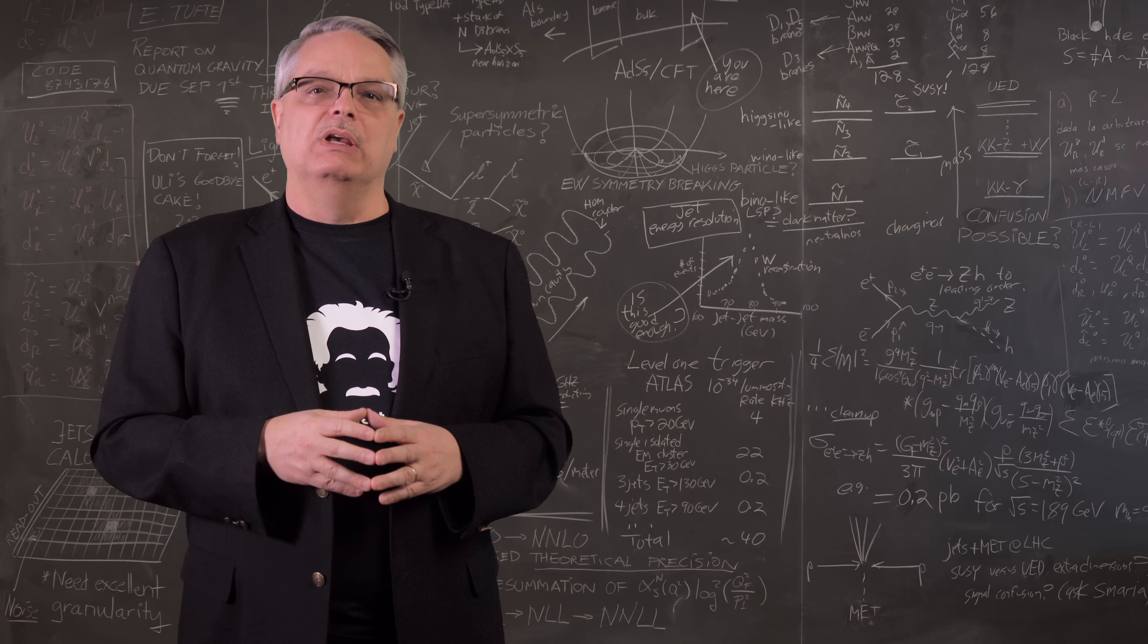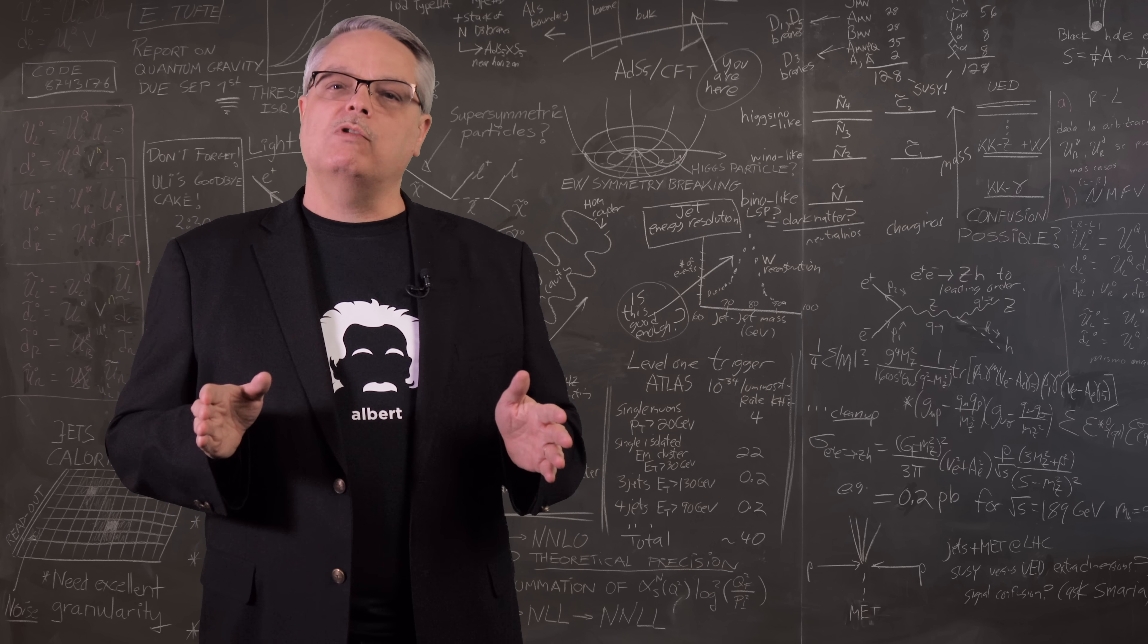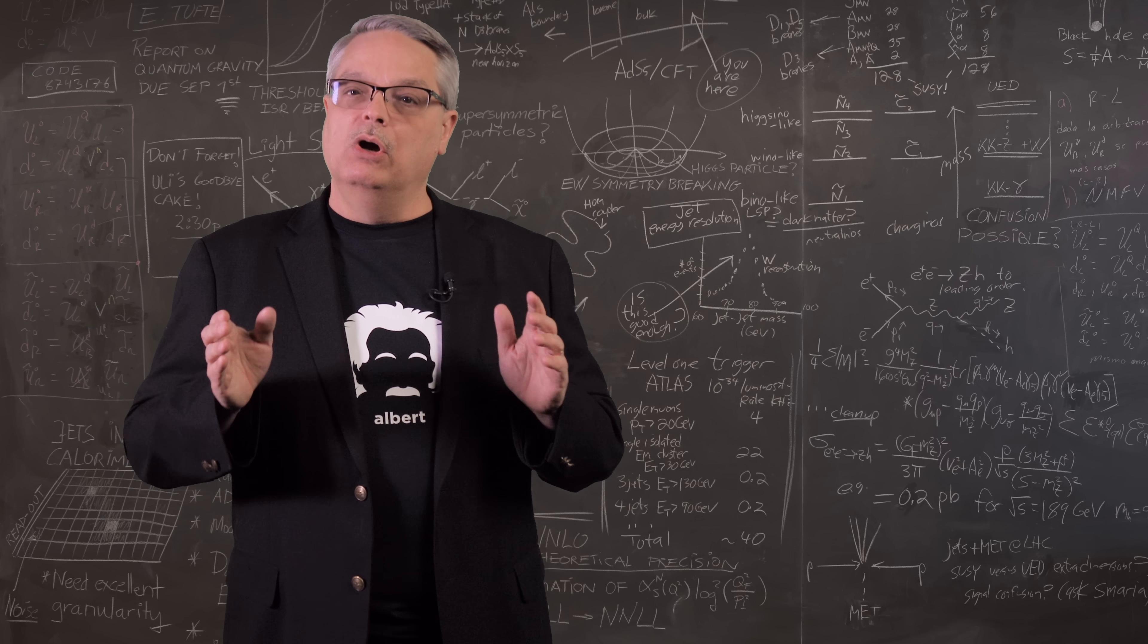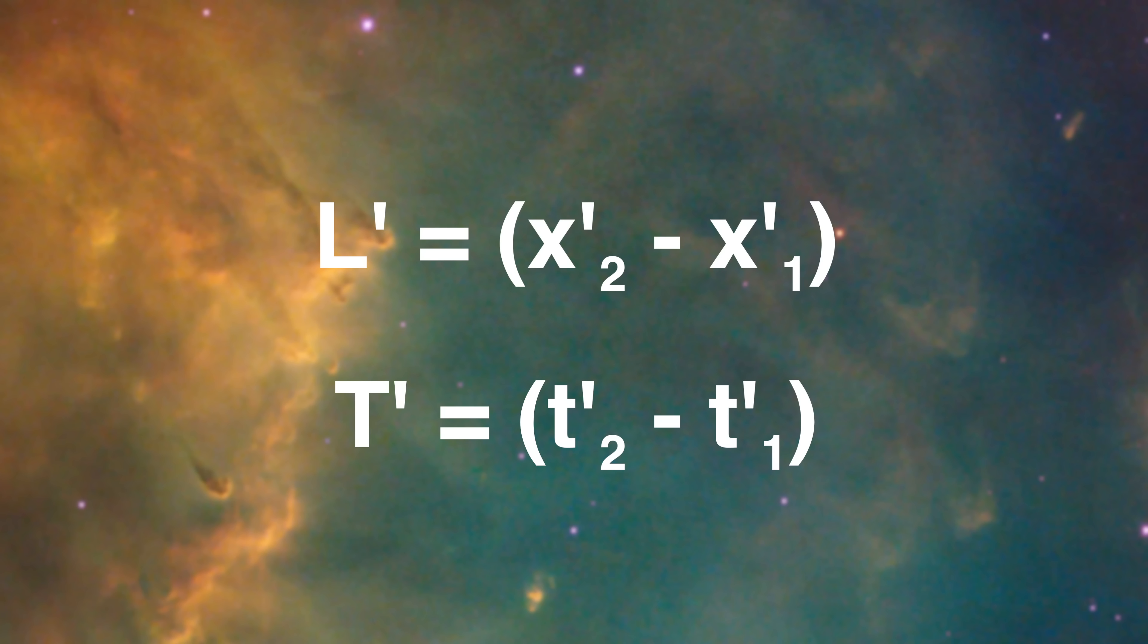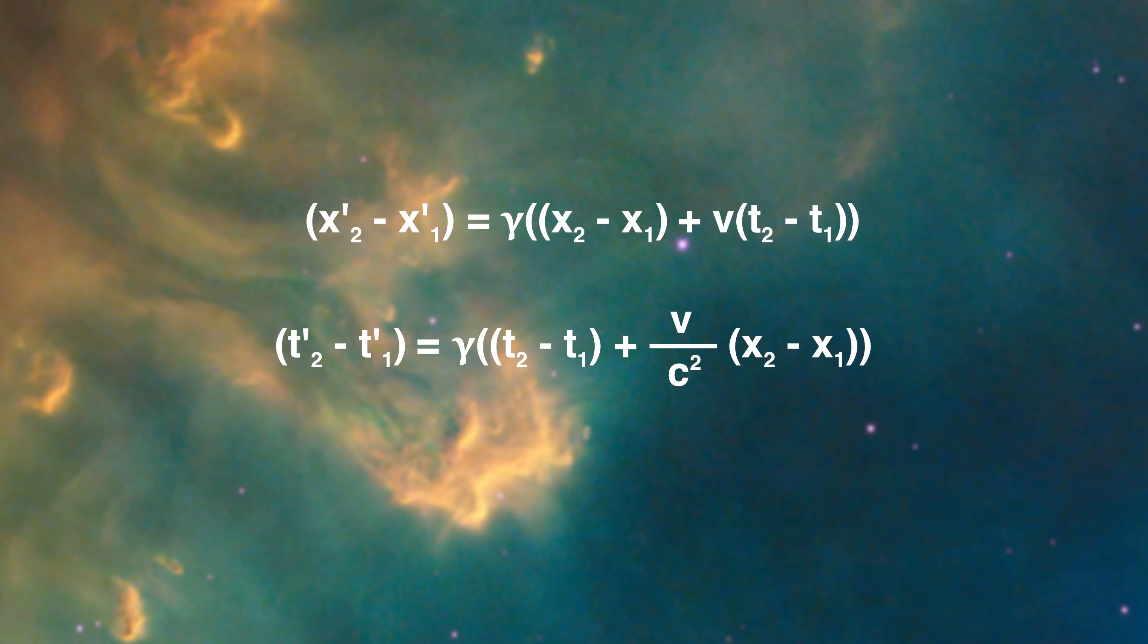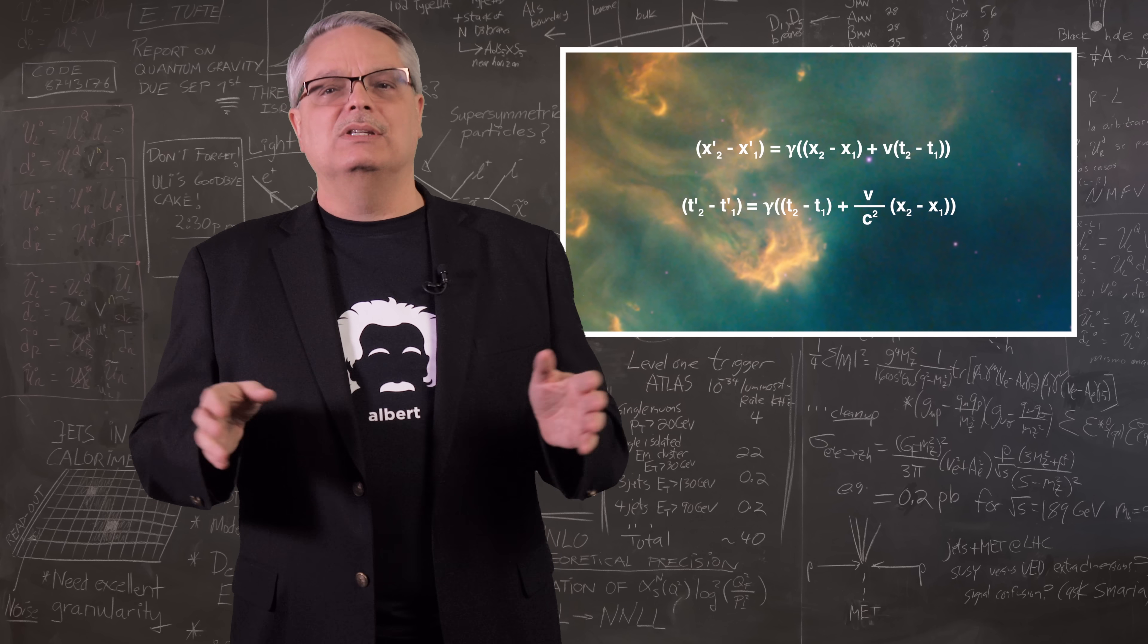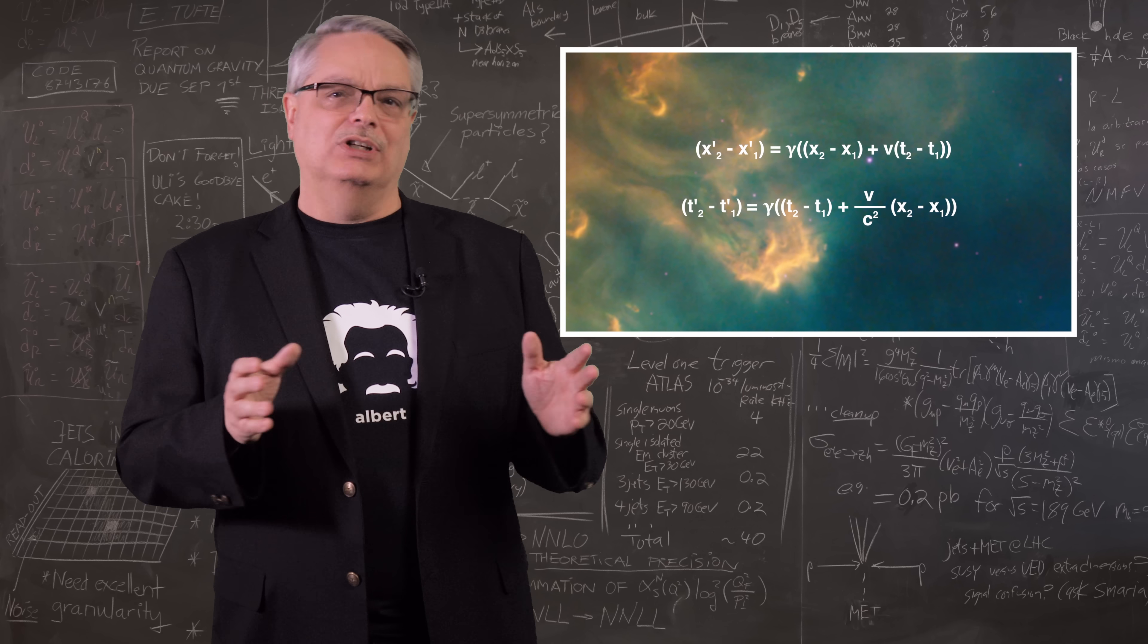The length according to the primed observer, the one seeing the stick move, we need to simultaneously measure the locations of both ends of the stick according to the primed observer. There are lots of ways to do this, but I think this way might be the clearest. Let's start by just subtracting the two positions and two times according to the primed observer. The length L prime is just x2 prime minus x1 prime and the duration big T prime is t2 prime minus t1 prime. We can write that out using the Lorentz transforms and we get what you see here. It's just the Lorentz equations but with the positions one and two subtracted. Maybe this is getting a little mathematical, but it's just these two equations.